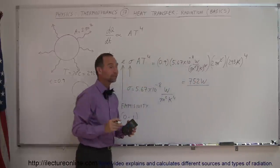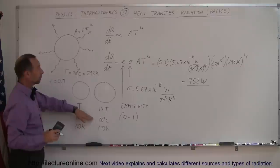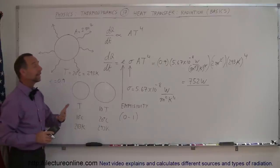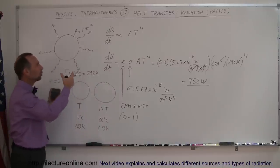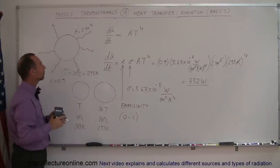So, an object at this temperature, which is room temperature, would be radiating out energy at a rate of 752 watts. That's 752 joules per second. So, you say, wow, wouldn't that mean that the object would cool and very quickly lose all of its heat?